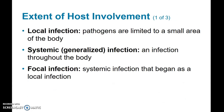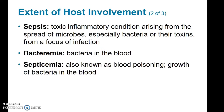We can also classify diseases by the extent of host involvement. A local infection is where pathogens are confined to a small area of the body. A systemic or generalized infection is spread throughout the entire body. A focal infection is a systemic infection that started as a local infection. Sepsis is a toxic inflammatory condition resulting from the spread of microbes, mostly bacteria, and the toxins they produce, usually from a focal infection. Bacteremia describes the presence of bacteria in the blood, and septicemia — also called blood poisoning — is the growth of bacteria in the blood.